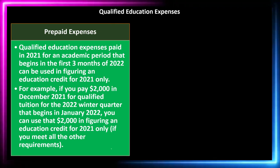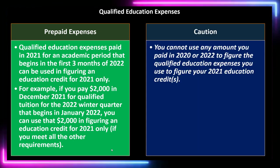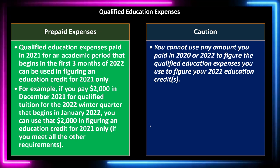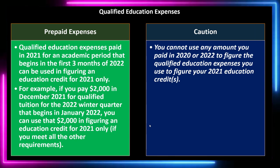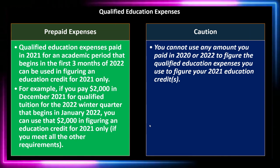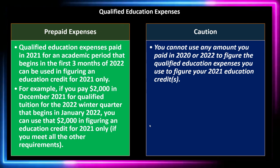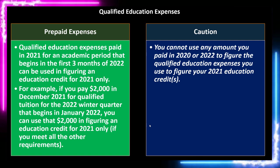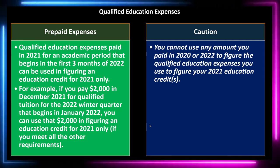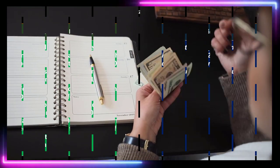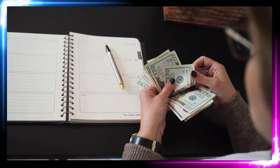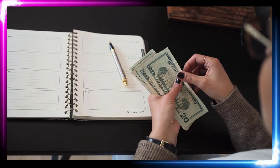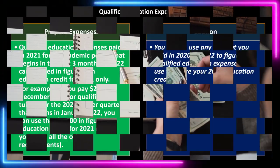For example, if you pay $2,000 in December 2021 for qualified tuition for the 2022 winter quarter beginning in January 2022, you can use that $2,000 when figuring your education credit for 2021, provided you meet all other requirements. Caution: you cannot use any amount paid in 2020 or 2022 to figure your 2021 credits. You can only count the money once, on one tax year's return.